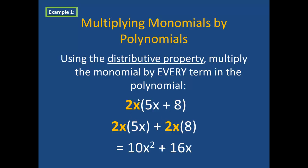When I simplify, 2x times 5x is 10x squared. I bring down my addition symbol and 2x times 8 is 16x. This is as simplified as this example gets as these are not like terms and therefore they cannot be added.